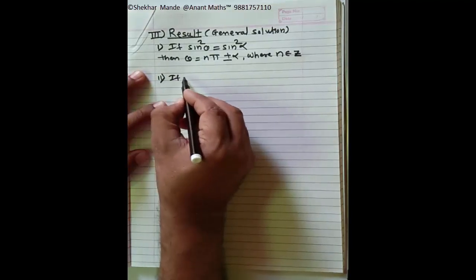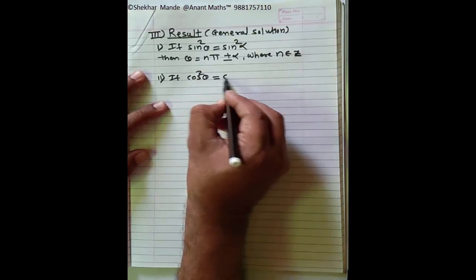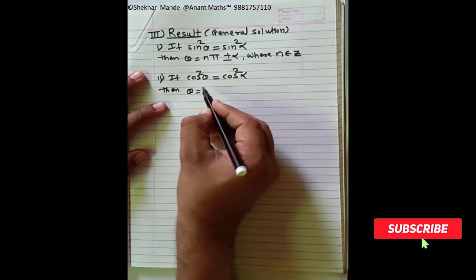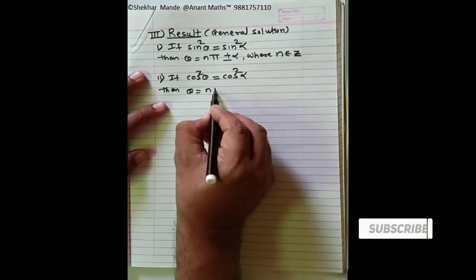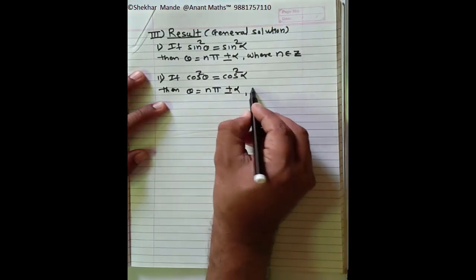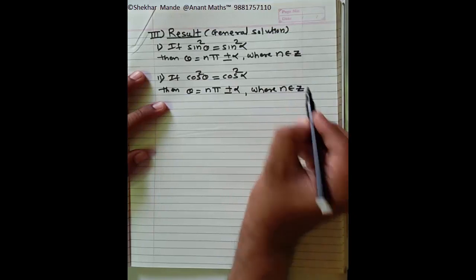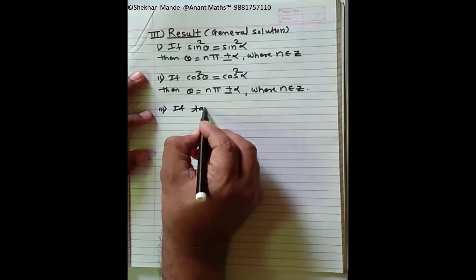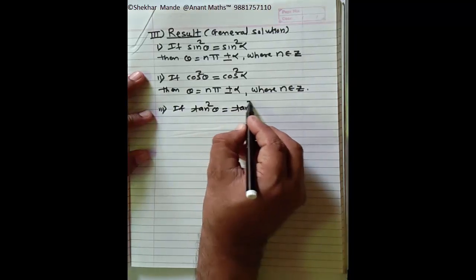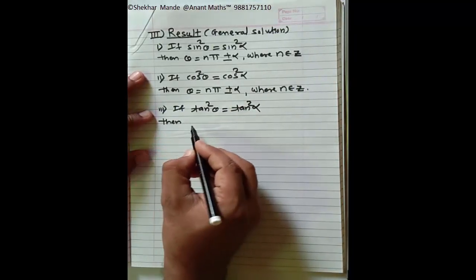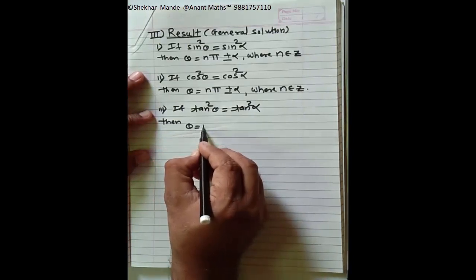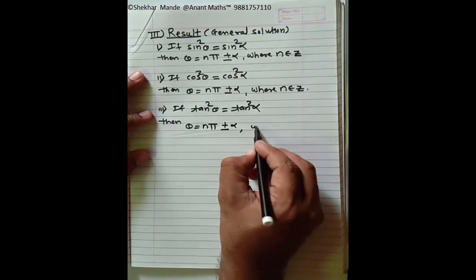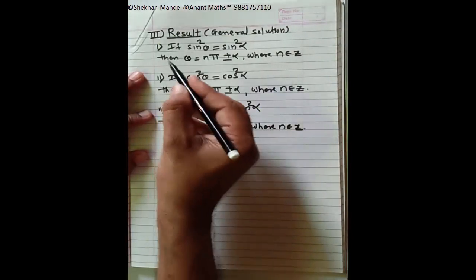If cos² θ = cos² α, then θ = nπ ± α, where n belongs to Z. Third: if tan² θ = tan² α, then θ = nπ ± α, where n belongs to Z. We have these three squared results as well.